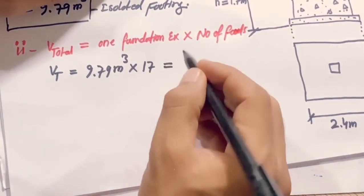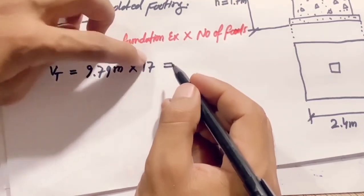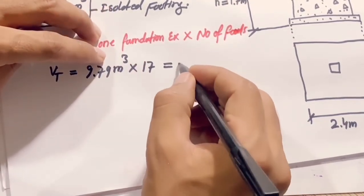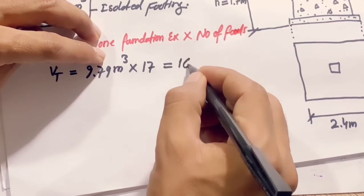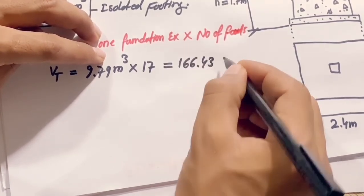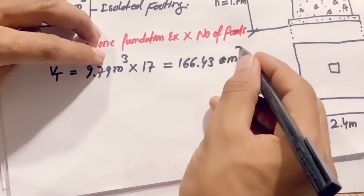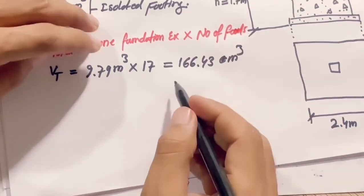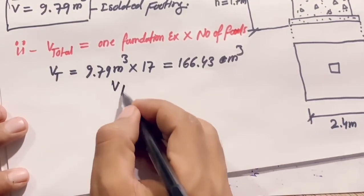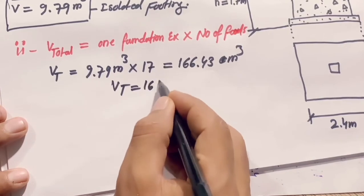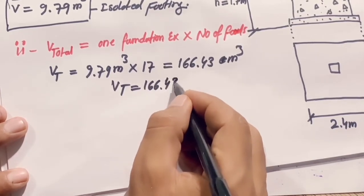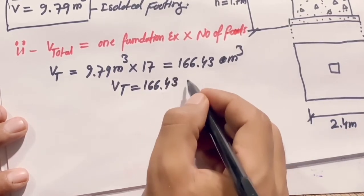When we multiply 9.79 by 17 we get the result: V_total = 166.43 cubic meters.